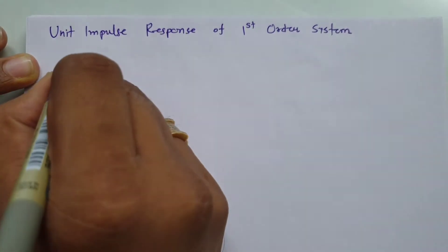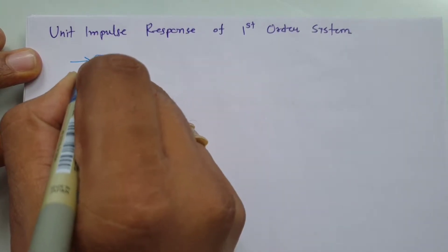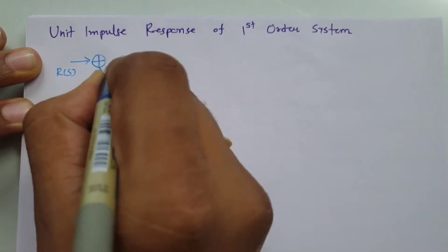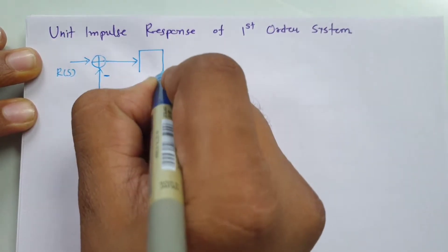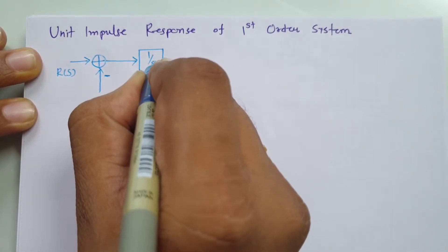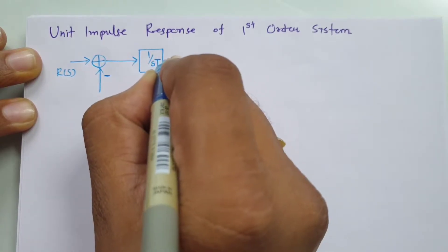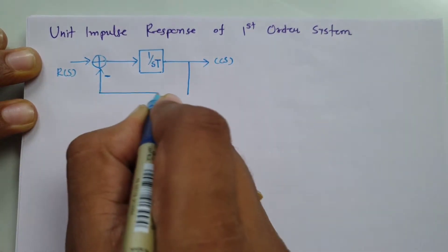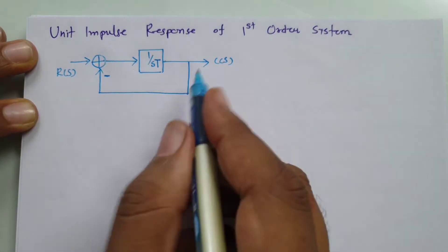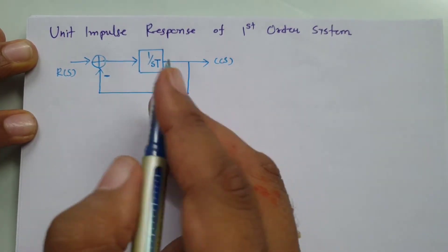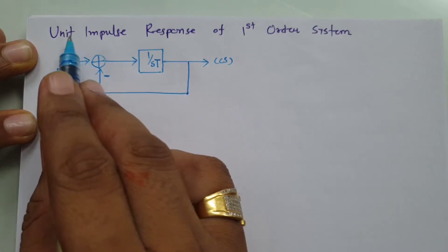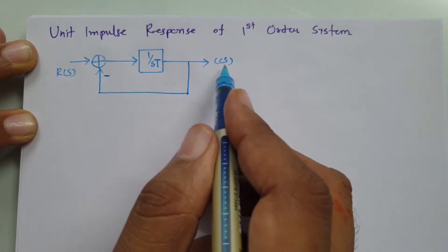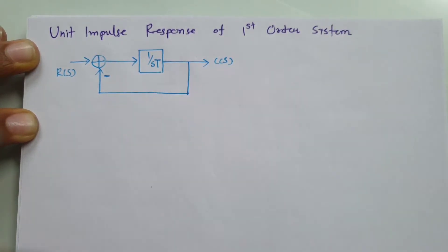First I will show you the first order system. In this first order system, my input is R(s), and here we have negative feedback. My first order system is 1 divided by s·T in the Laplace domain, and my output is C(s). There is unity negative feedback. This is the standard first order system, where the input R(s) will be the unit impulse signal, and we are observing output C(s) in both the Laplace domain and time domain.